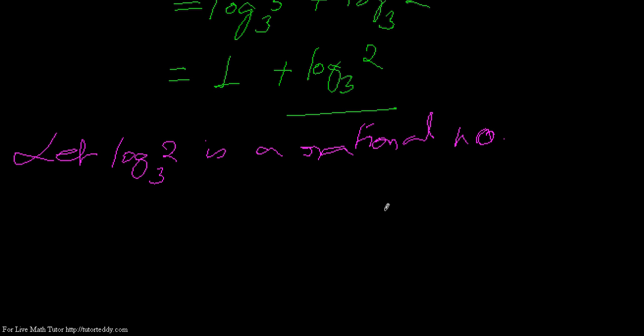So next what do we do? After we assume that log 2 base 3 is a rational number, and since we have assumed that it is a rational number, so we can write that log 2 base 3 equals to P by Q, where P is a rational number, Q is a rational number, and Q is not equal to 0.